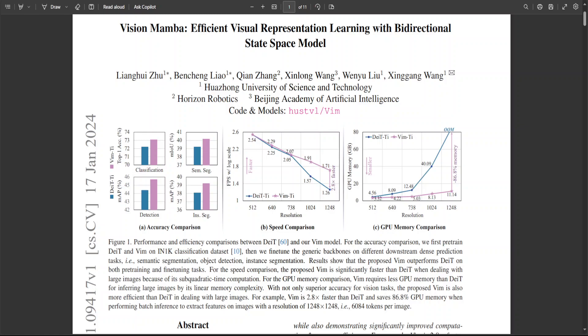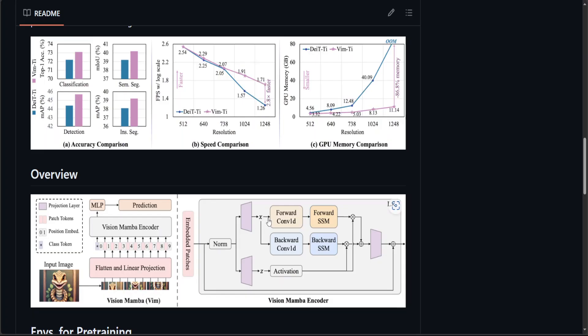The way it works in short is quite interesting. If you look at this overview diagram, you would see that the researchers have shown that the reliance of visual representation learning on self-attention is not necessary and they have proposed this new generic vision backbone with bi-directional Mamba blocks which marks the image sequences with position embeddings and compresses the visual representation with bi-directional state space models.